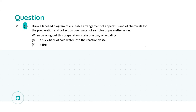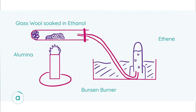Looking at Question 2 Part A, the first thing we need to do is draw a labeled diagram for a suitable arrangement of apparatus and chemicals for the preparation and collection over water of pure ethene gas. The main takeaways are: draw a labeled diagram for the preparation and collection of pure ethene gas. After that, we're asked two theory questions — Part i on how to avoid suckback, and Part ii on how to avoid fire.